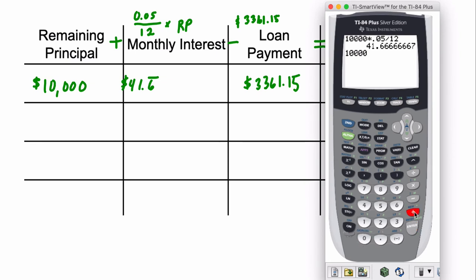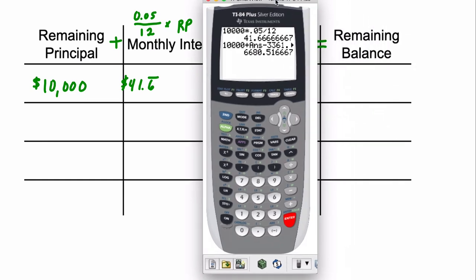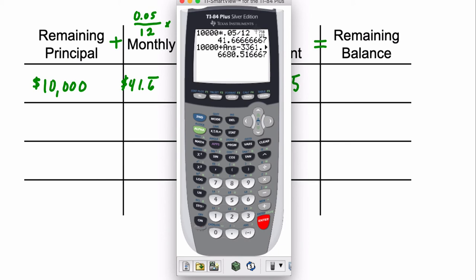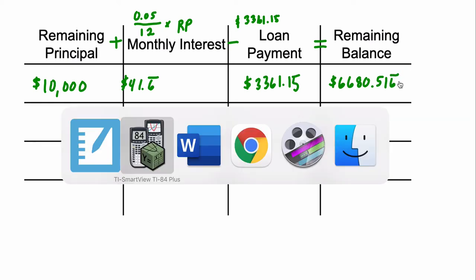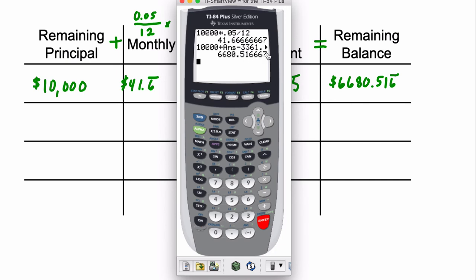So we're going to do $10,000. Now on every calculator, there's a way to recall a previous answer. I'm going to press 2nd, and then the negative symbol is for answer. So it pulls up the previous number exactly. And I'm going to subtract 3361.15. And what's left is this number, 6680.516667. And that's really 0.6 repeating. So it's 6680.516 repeating.